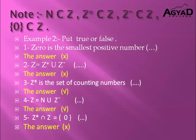Number 2: Z equals Z positive union Z negative. Is this right or wrong? Let's remember: Z equals the union of three sets — Z positive, Z negative, and the set {0}. In this statement, the set {0} is missing. So this statement is false because it omits the set of zero.